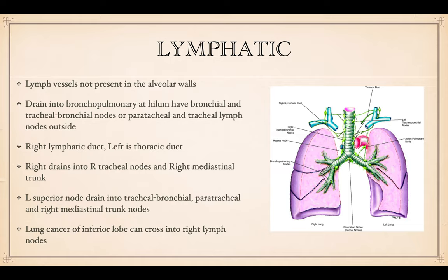Lymphatics are not present in the alveolar cells, but they are present in the terminal bronchioles. Those drain into the bronchopulmonary nodes at the hilum and the tracheobronchial nodes or paratracheal nodes outside the bronchi. On the right is the lymphatic duct, and on the left is the thoracic duct. The right drains into the right tracheal nodes and right mediastinal trunk, while the left drains into the tracheobronchial nodes along with the paratracheal and right mediastinal trunk nodes. The left is notable because it crosses over — this is how a lung cancer of the inferior lobe can cross into the right lymph nodes, which is problematic because it would be a stage 3 or stage 4 lung cancer once it's in the lymph nodes.